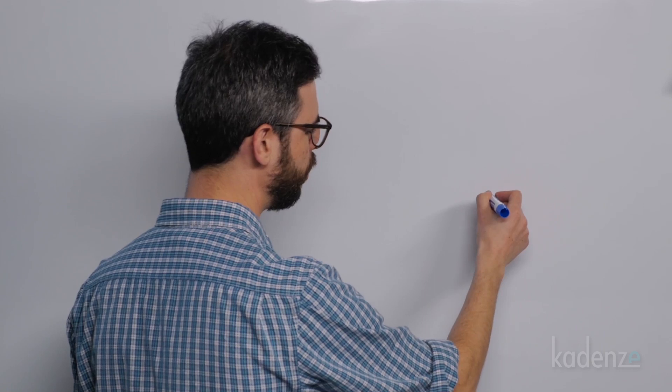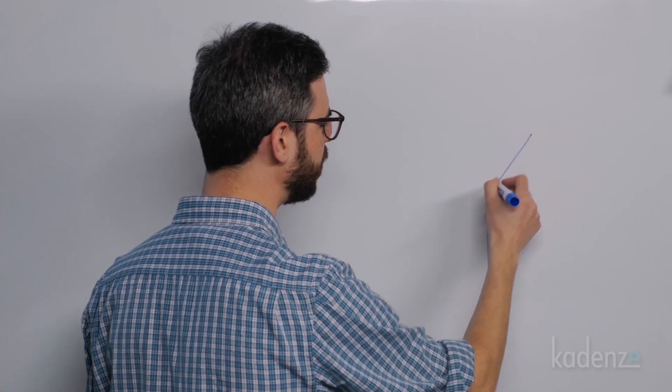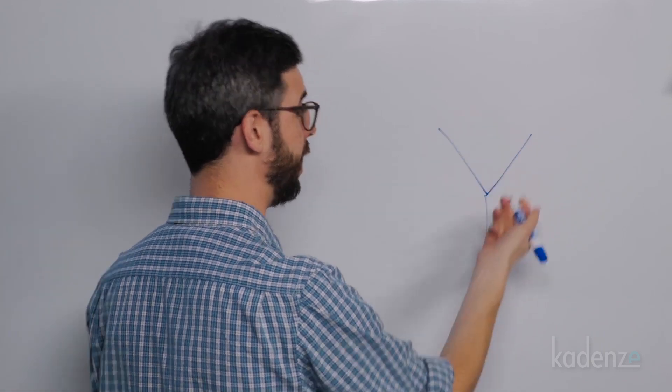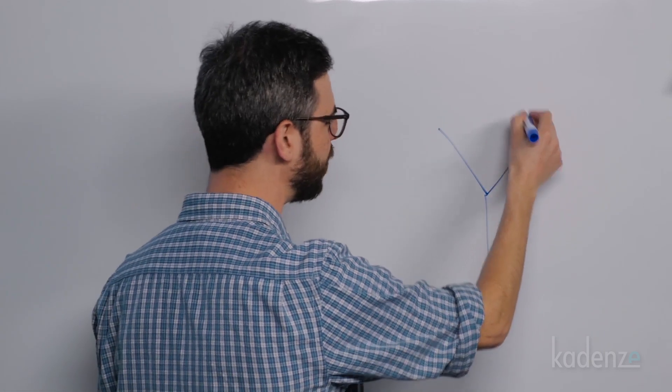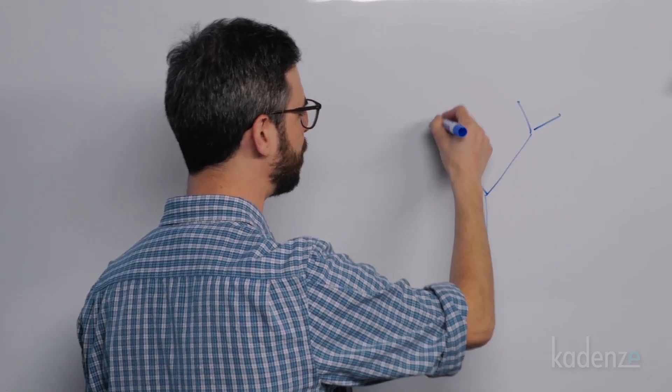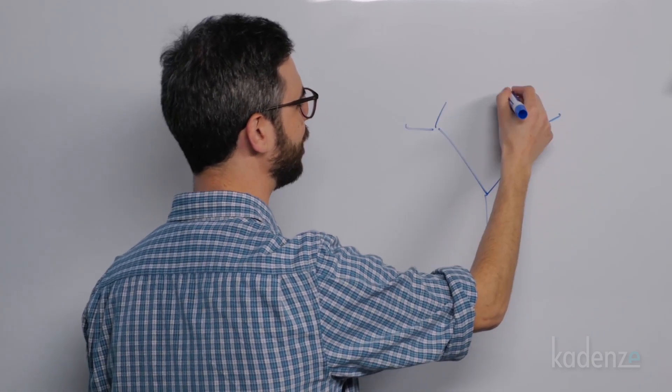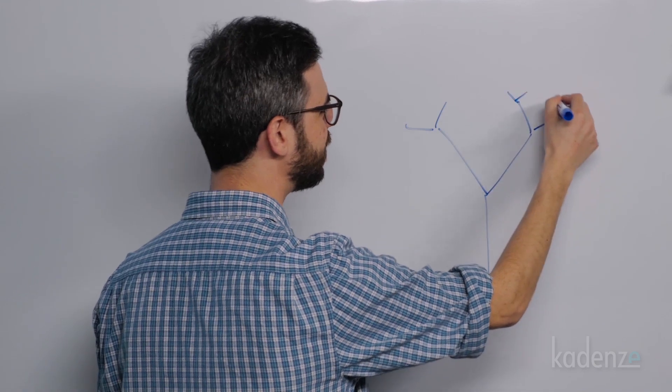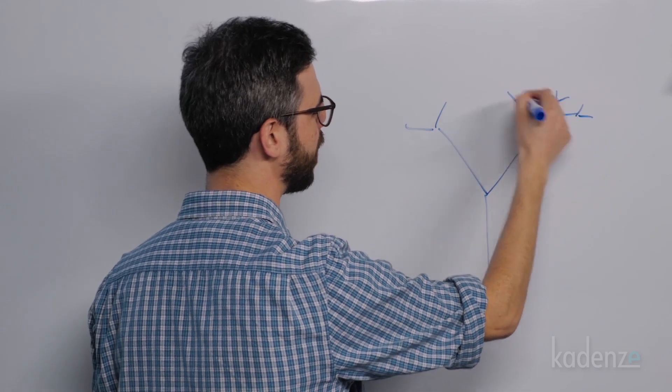That tree, if you remember, has a root. That root has two branches attached to it. Each branch also has two branches attached to it, and each branch has two branches, et cetera.